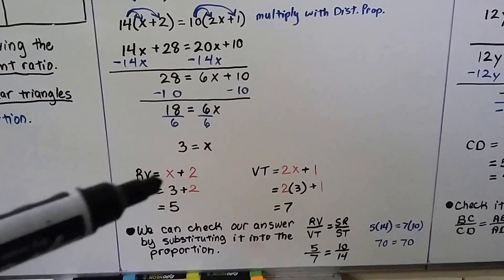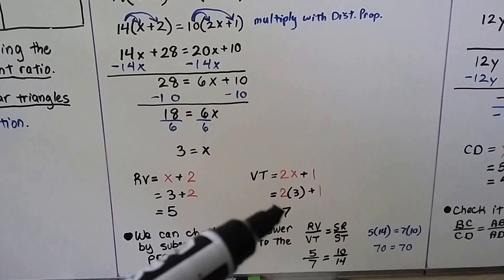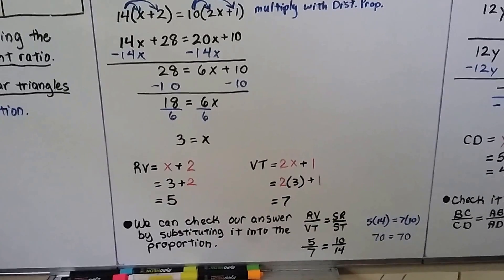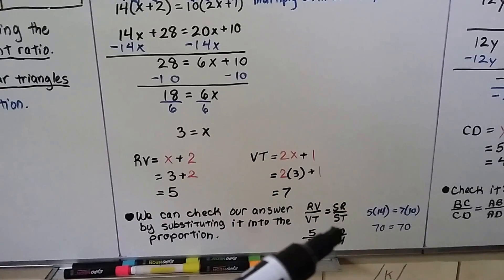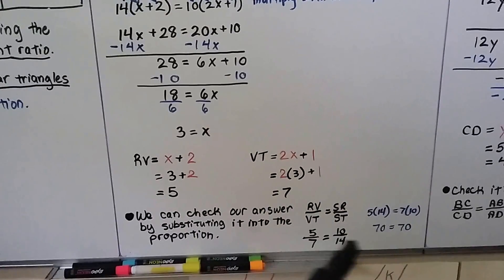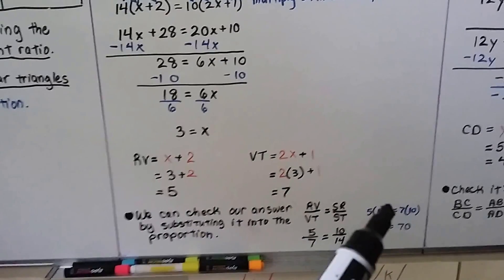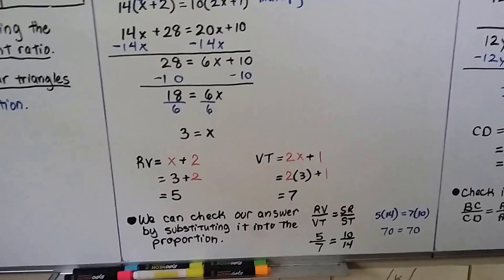We substitute it into our expression and RV is equal to 5 and VT is equal to 7. Now we can check our answer by substituting it into the proportion. We would have 5 over 7 is equal to 10 over 14. And that is proportional. We can even do cross products and do 5 times 14 is equal to 7 times 10, which is 70 equals 70.